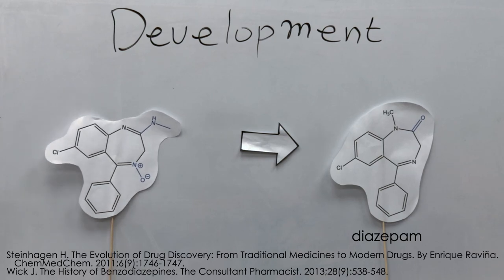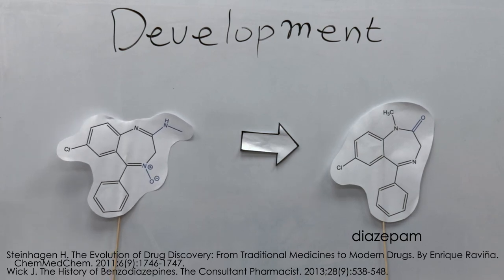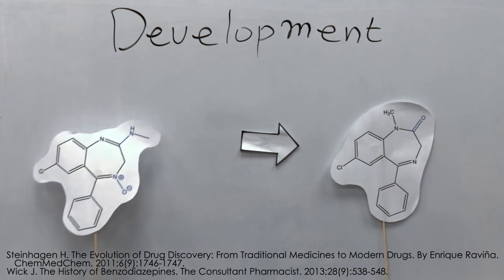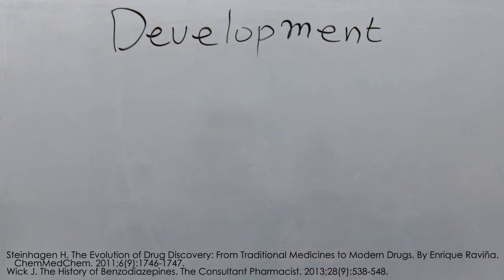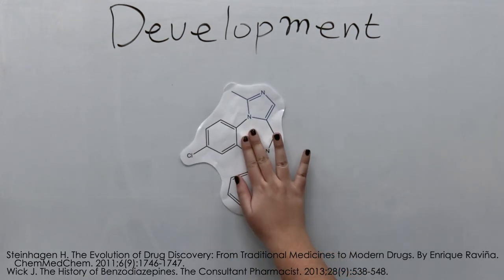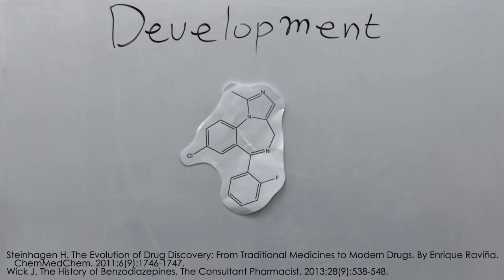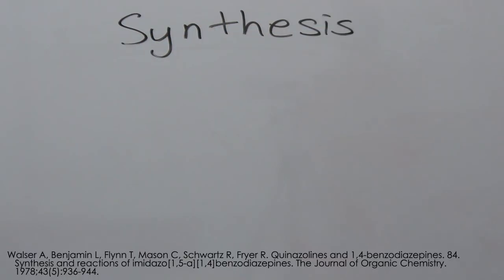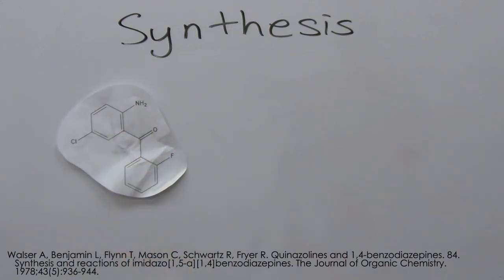Roche marketed it as Valium in 1963, and it became extremely popular. Novel developments in benzodiazepine chemistry led to the synthesis of midazolam through introducing a fluorine and an imidazol ring. This was first discovered by Walter and Fryer at Hoffman-LaRoche. A more recent synthesis of midazolam begins with the starting compound containing fluorine, rather than substituting it in during the process.